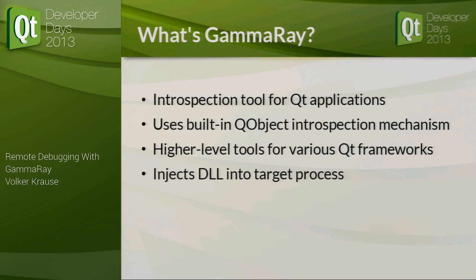As you might know, QObject provides some introspection features already, so you can query it for its properties, for its signals and slots, and so on at runtime. Building on top of that, we add — I think in total now 24 higher-level tools — stuff like a model view browser, a scene graph inspector, a state machine visualizer, that kind of stuff. That allows you to work on the same conceptual level with the debugger as with the frameworks you are designing your application with.